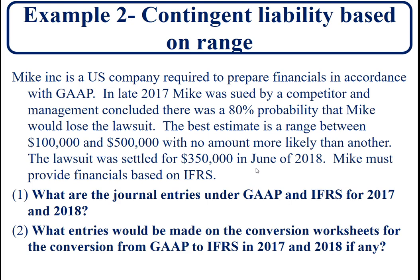Now let's take a look at an example where you have a range. Mike is a U.S. company required to prepare financials in accordance with GAAP. In late 2017, Mike was sued by a competitor and management estimated an 80 percent probability — which means it doesn't matter which standard we apply, both international and GAAP require recording something since the probability exceeds 70 percent. The range is between one hundred and five hundred thousand dollars. In the following year they ended up paying three hundred and fifty thousand. We'll determine what the journal entries would look like under GAAP versus the international standard, and what entries would be made on the conversion worksheets.